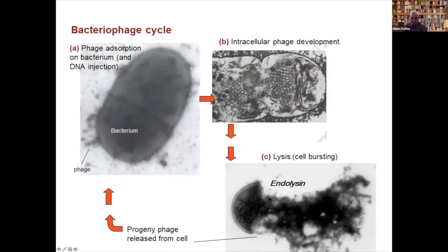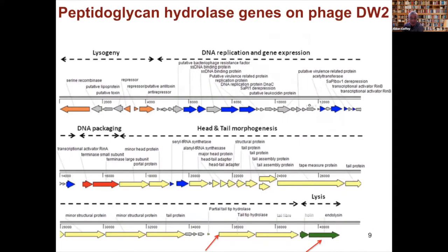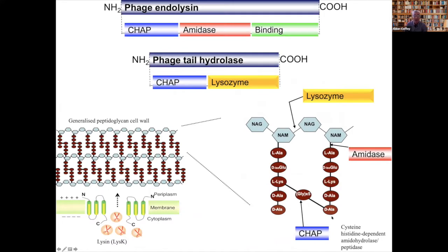Endolysins are the enzymes which mediate the destruction of the peptidoglycan, mediating release of progeny phages and permitting the continuation of the lytic cycle. Another enzyme which does a similar thing is the tail-associated hydrolase, which mediates the injection of the phage genome into the bacterial host. Genes for these can be readily found on any phage genome — the tail tip hydrolase and the endolysin are readily located.